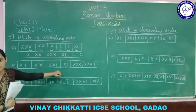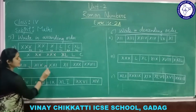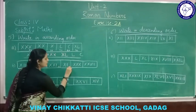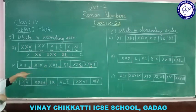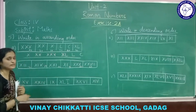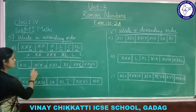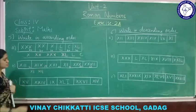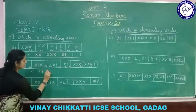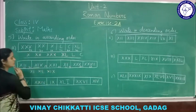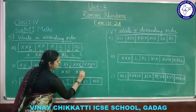Similarly, arrange the next set in ascending order. Convert: X I I is 12, X I X is 19, X X I is 21, X I is 11, and X X V I I is 27. Find the smallest number first: 11, then 12, then 19, then 21, then 27, then X X X which is 30.